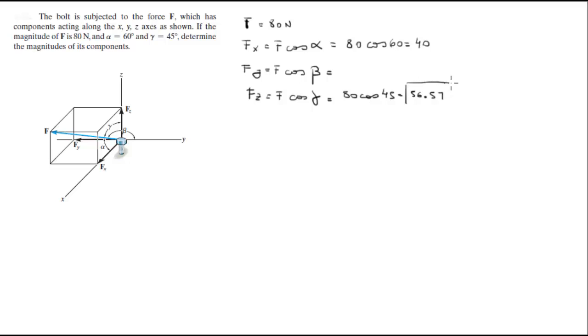So we got 2 out of the 3 components. You know that F squared equals F_X squared plus F_Y squared plus F_Z squared.